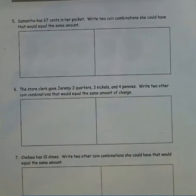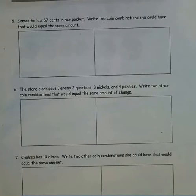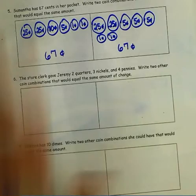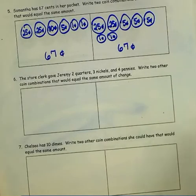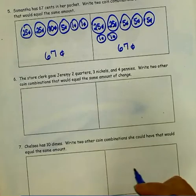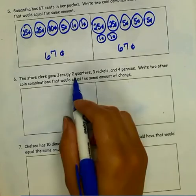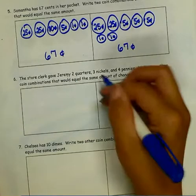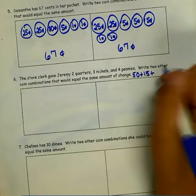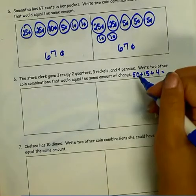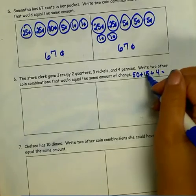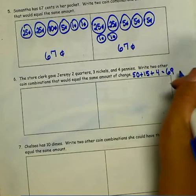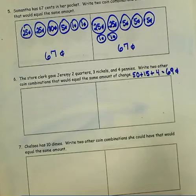Number 5 — Samantha has sixty-seven cents in her pocket. Write two coin combinations she could have that would equal the same amount. Before I write two other combinations, I want to know how much money she has. She has two quarters, which is fifty cents, plus three nickels, which is fifteen cents, plus four pennies. So she has fifty, sixty-five, plus four more is sixty-nine cents. So I need to find two other combinations of sixty-nine cents.